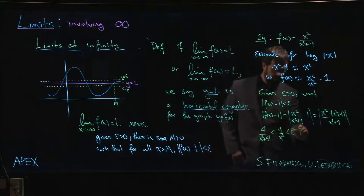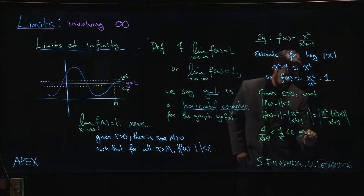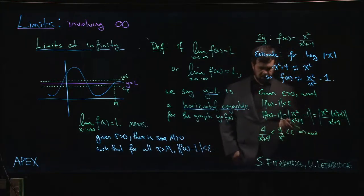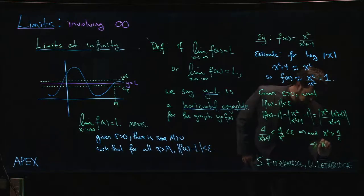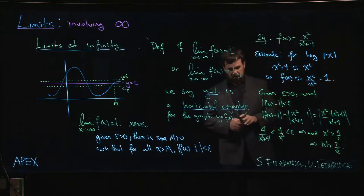So that means that we want, if we take reciprocals, we need x squared. And if we move the 4 over, we need x squared to be bigger than 4 over epsilon. So we need x to be in absolute value bigger than 2 over the square root of epsilon.